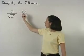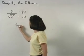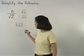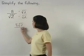On top, 8 times the square root of 2 is 8 root 2. And on the bottom, root 2 times root 2 is 2.